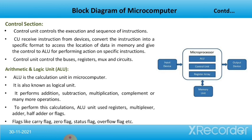Next is the ALU — the arithmetic and logical unit. The ALU is the calculation unit in the microcomputer. It performs addition, subtraction, multiplication, complement, and many more operations. To perform these calculations, the ALU unit uses resistors, multiplexers, adders, half-adders, and flags. Flags such as carry flag, zero flag, status flag, overflow flag, etc., come under the arithmetic and logical unit.